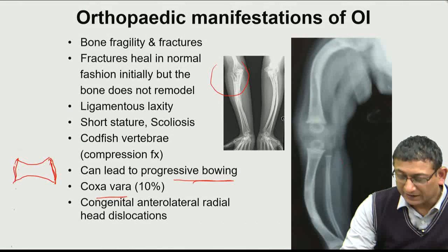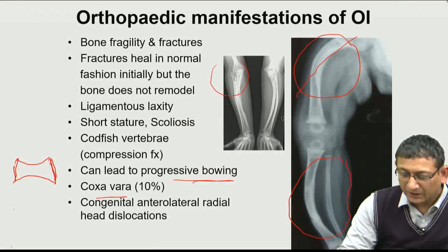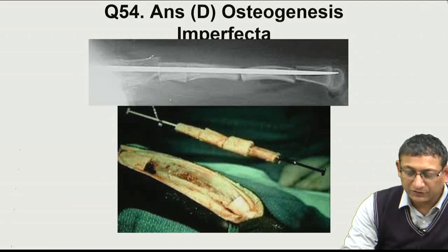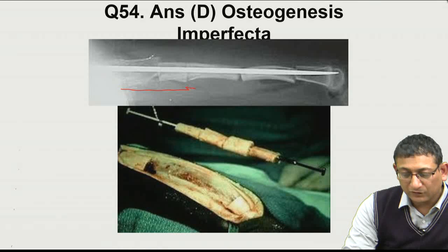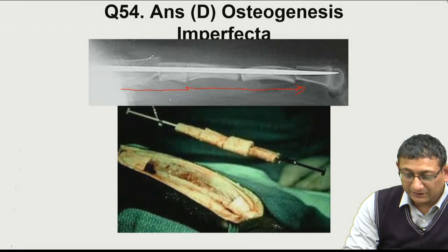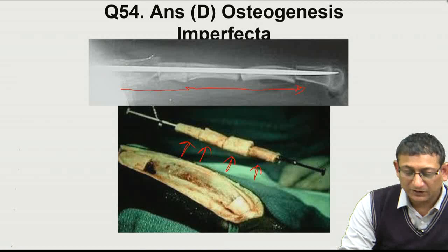The kebab treatment corrects these deformities in osteogenesis imperfecta. Because putting a straight nail would cause it to exit at another point due to bowing, multiple osteotomies are done at multiple sites and a nail is passed through all the osteotomized fragments — like a kebab skewer, as shown in the picture. The answer to question 54 is D.